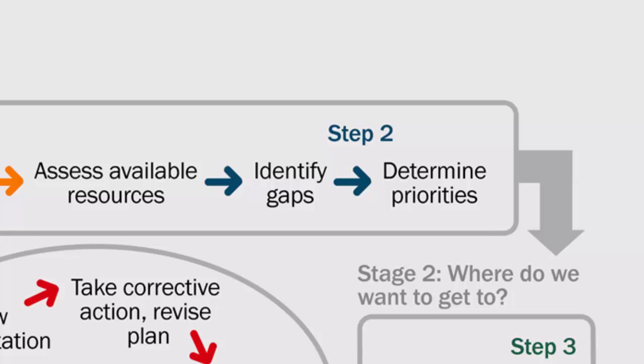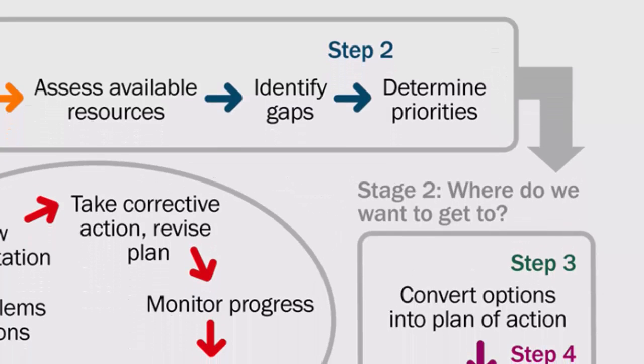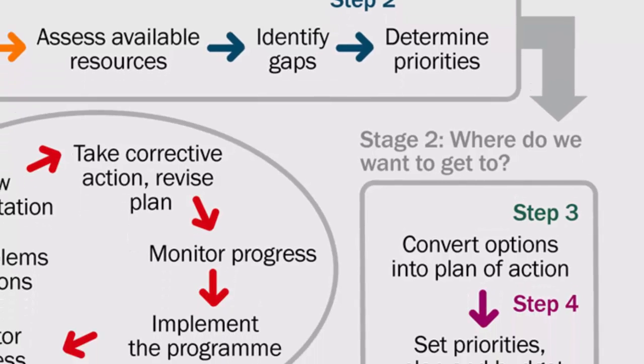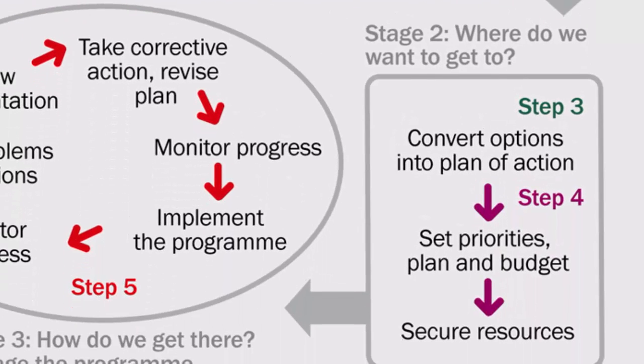Stage two of planning involves understanding where we want to get to, and there are two steps to program planning activities in this stage. In step three, we convert the prevention strategies identified in step one into a plan of action with clear objectives which have targets and indicators. In step four, we prioritize our objectives and create a budget and timetable for the activities needed to achieve them. We also vitally secure the resources we need to carry out the plan.